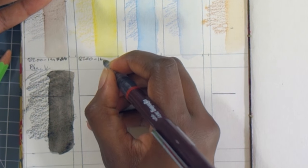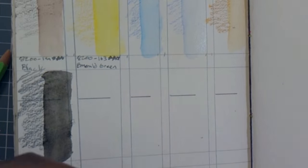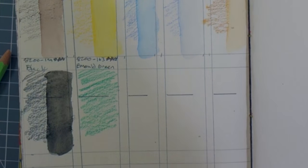Emerald green is this really pretty color. I think I'd call this a phthalo green. It's very almost neon green looking.